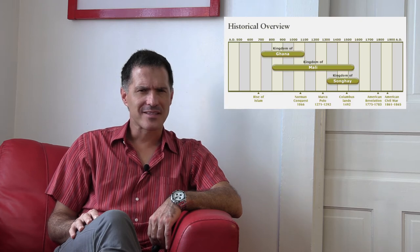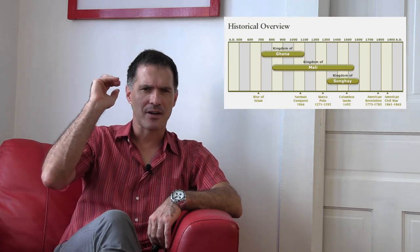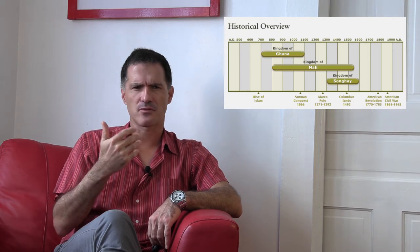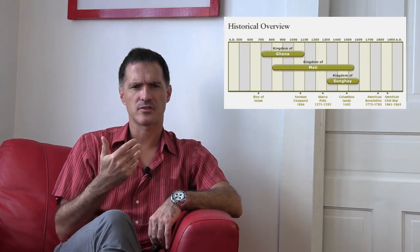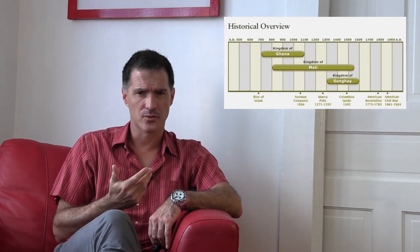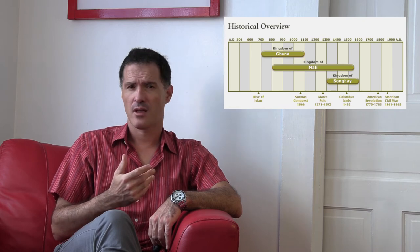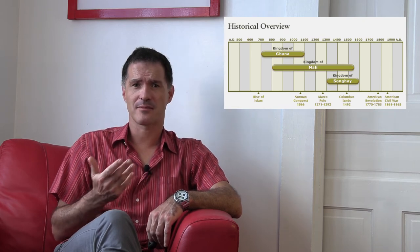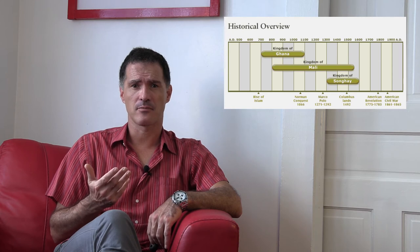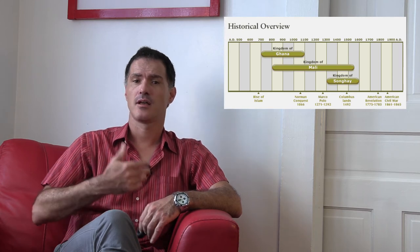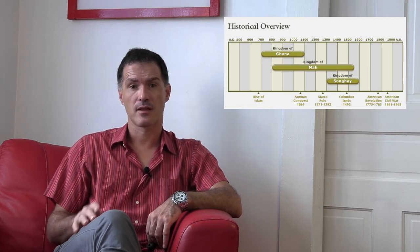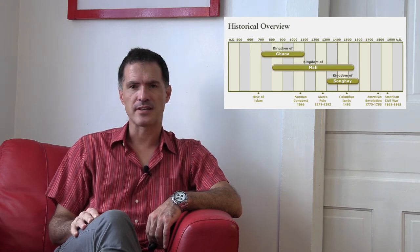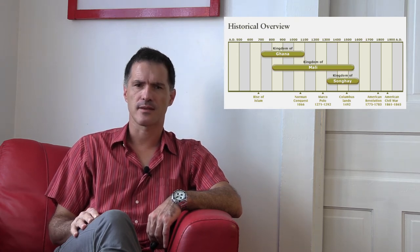The reign of Mansa Musa really marked the apex of the Empire of Mali. Later on, there were factional disputes between various pretenders to the throne, and that led to civil wars and the disruption of trade. Local vassals no longer saw the point of obeying a king who could not maintain internal peace. Then they revolted, and the empire fell apart. But Islam survived and remains a major religion in West Africa to this day.